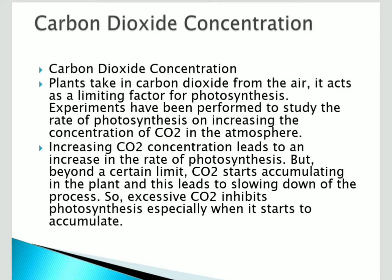However, beyond a certain limit, carbon dioxide starts to accumulate in the plant, leading to a slowing down of the process. Excessive carbon dioxide inhibits photosynthesis. Therefore, plants require an optimum amount of carbon dioxide for the photosynthesis process.